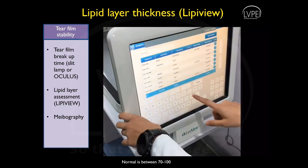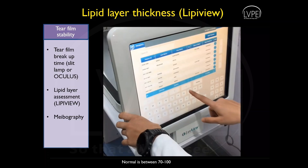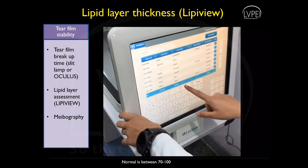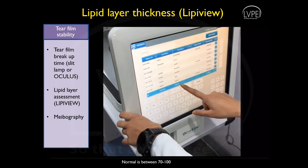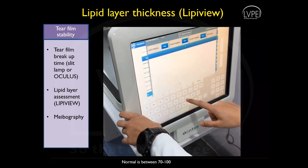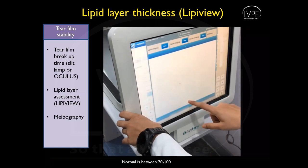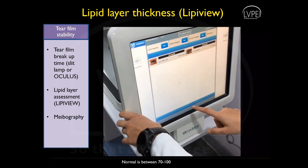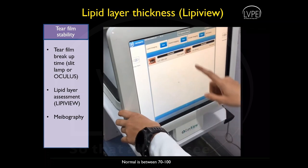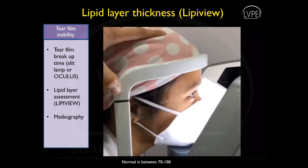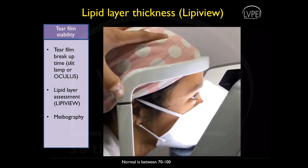Lipid layer assessment can be done on an instrument known as the LipiView interferometer. It gives a real-time visualization of the lipid layer to evaluate the dynamic response of lipids to blinking. Patient entries are done as shown, and the visuals provide an opportunity to educate the patient about their personal ocular health.